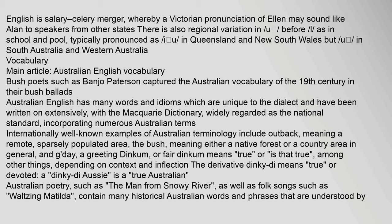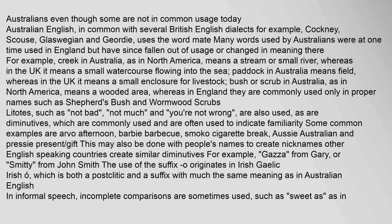Australian English, in common with several British English dialects such as Cockney, Scouse, Glaswegian and Geordie, uses the word 'mate'. Many words used by Australians were at one time used in England but have since fallen out of usage or changed in meaning. For example, 'creek' in Australia, as in North America, means a stream or small river, whereas in the UK it means a small watercourse flowing into the sea. 'Paddock' in Australia means field, whereas in the UK it means a small enclosure for livestock. 'Bush' or 'scrub' in Australia means a wooded area, whereas in England they are commonly used only in proper names.